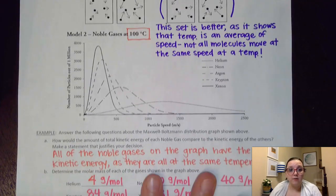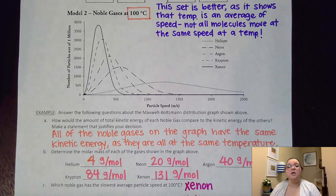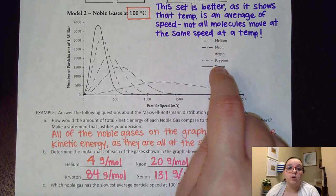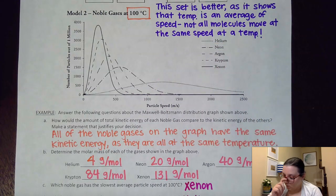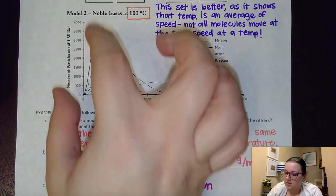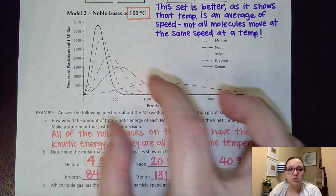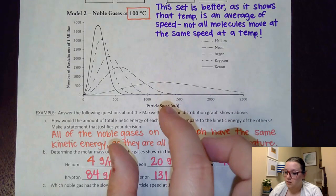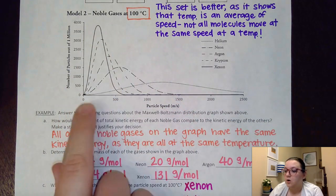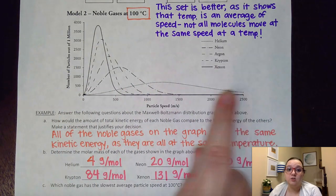Now this second graph was very different than the first one. The first graph showed one particular gas at different temperatures. This graph is showing different gases all at the same temperature. All of the gases here happen to be part of the noble gas family. And so I notice again the kind of shift that we see in the shape of these curves. Some of the curves are taller and skinnier, whereas some are flattened and stretched out.